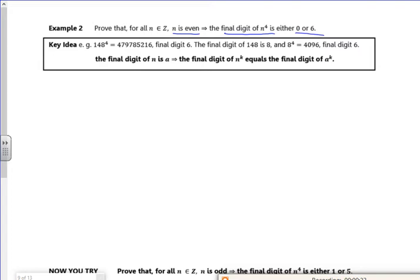Right, let's try and see what this key idea is telling us. So any even number raised to the power of four has a six or a zero at the end. Can you see that?